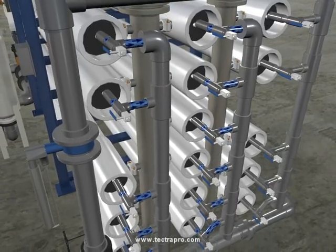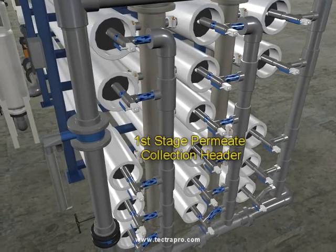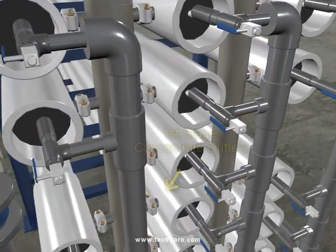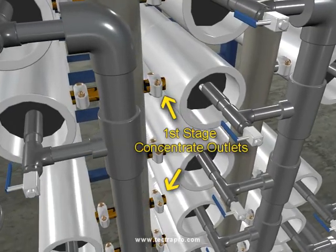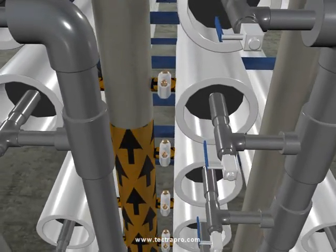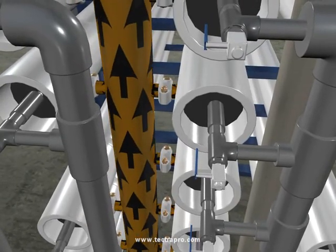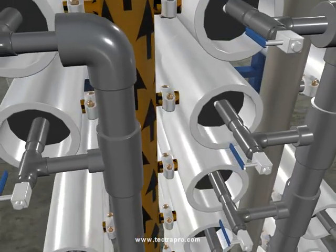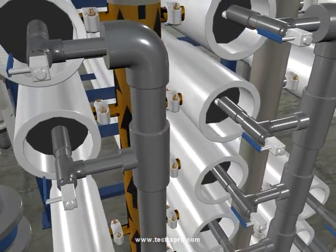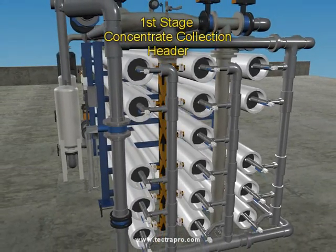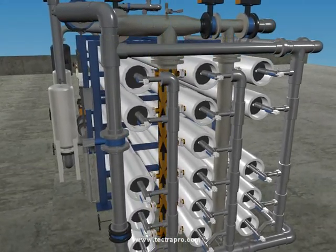Permeate is collected from all 11 of the pressure vessels in the first-stage permeate water collection header. Concentrate flow is the feedwater from which water molecules have been removed, with the contaminants remaining behind. The concentration of contaminants goes up due to the loss of pure water. Therefore, this water is called concentrate as it exits the RO pressure vessels. Concentrate which exits the first-stage pressure vessels is collected in the first-stage concentrate header.